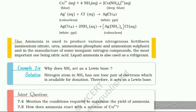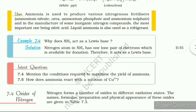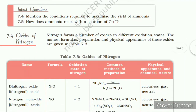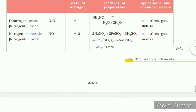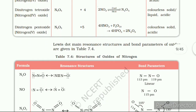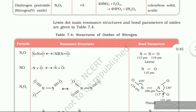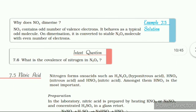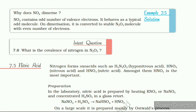Aqueous HNO₃ can be concentrated by distillation up to 68% by mass; further concentration to 98% can be achieved by dehydration with concentrated H₂SO₄. Properties: It is a colorless liquid; laboratory-grade nitric acid contains 68% HNO₃ by mass and has a specific gravity of 1.504. In the gaseous state HNO₃ exists as a planar molecule. In aqueous solution it behaves as a strong acid giving hydronium and nitrate ions. Concentrated nitric acid is a strong oxidizing agent and attacks most metals except noble metals such as gold and platinum. Zinc reacts with dilute nitric acid to give N₂O and with concentrated acid to give NO₂. Chromium and aluminium do not dissolve in concentrated nitric acid because of a passive film of oxide on the surface.